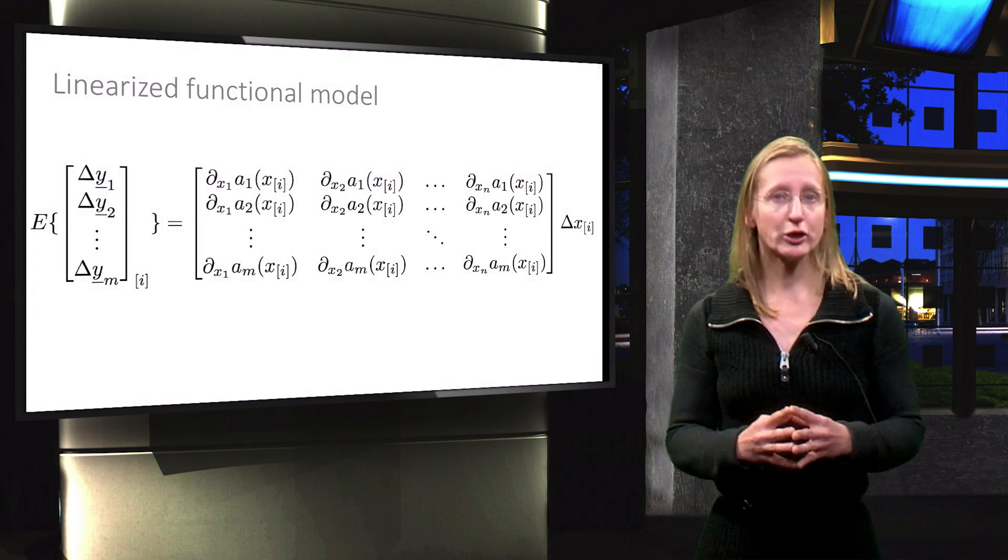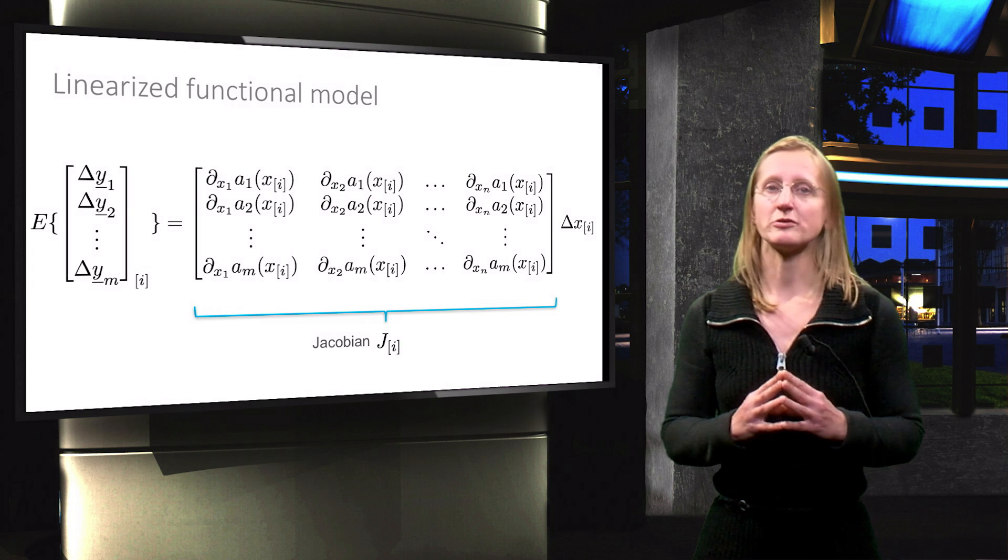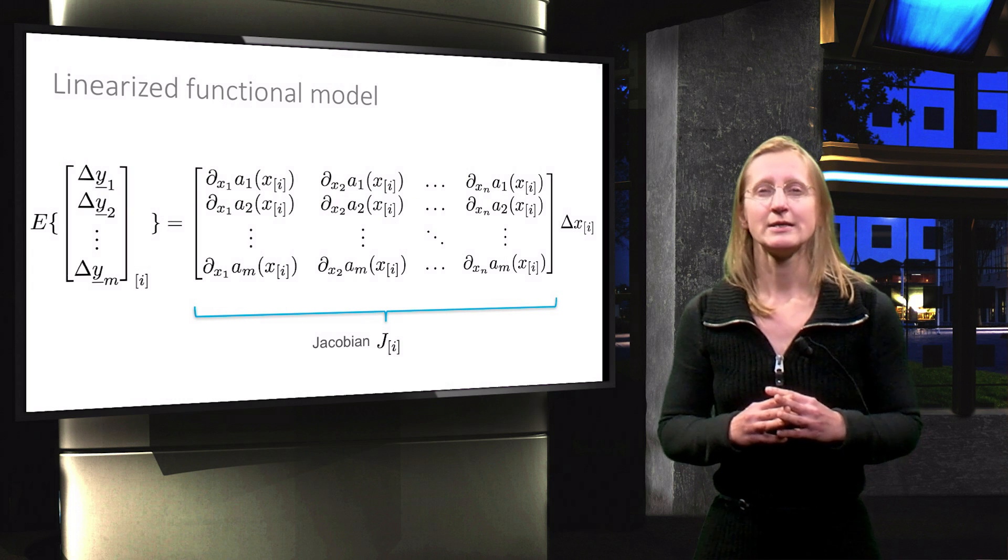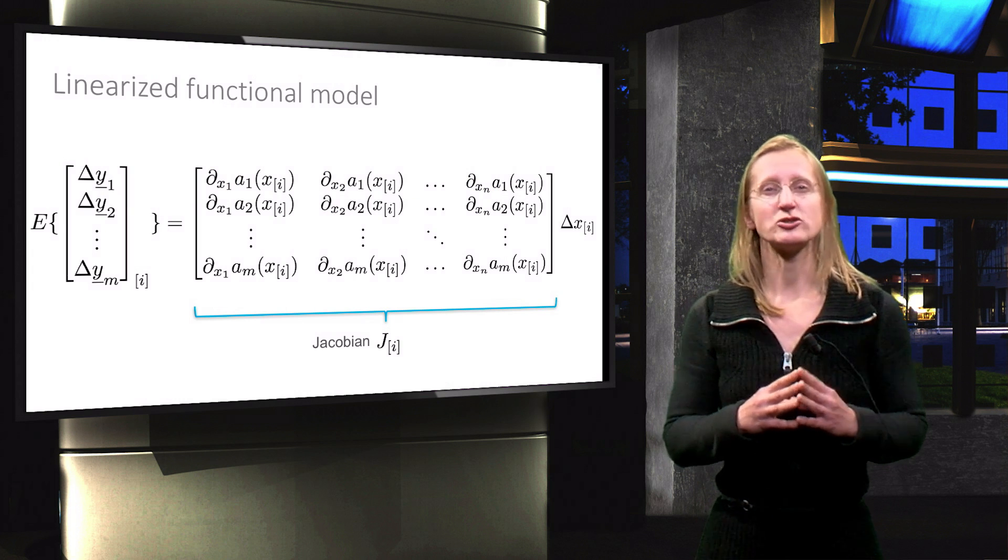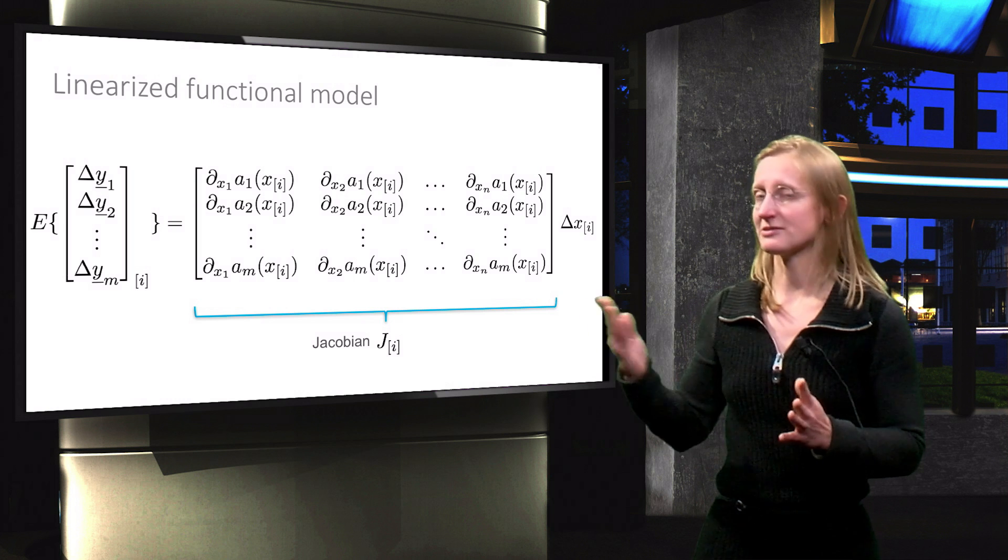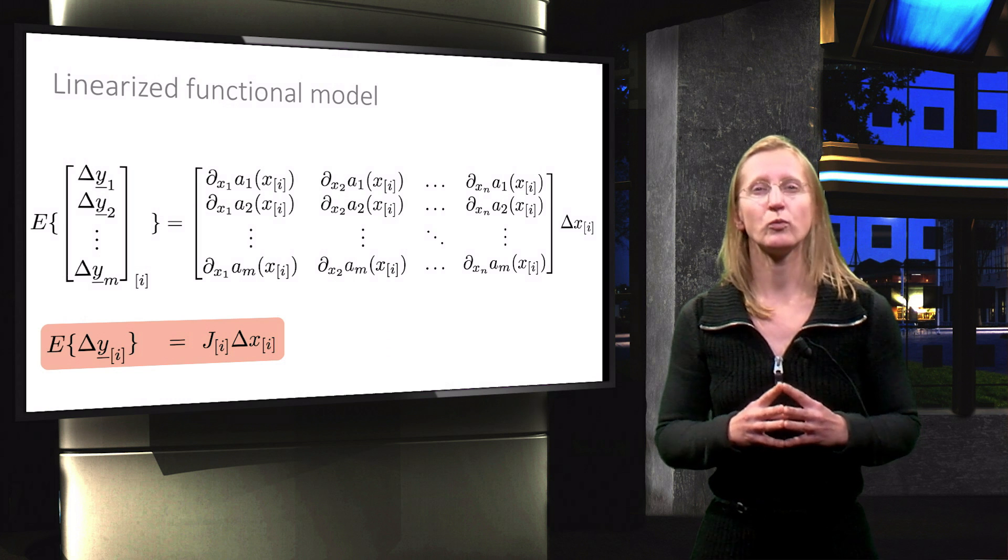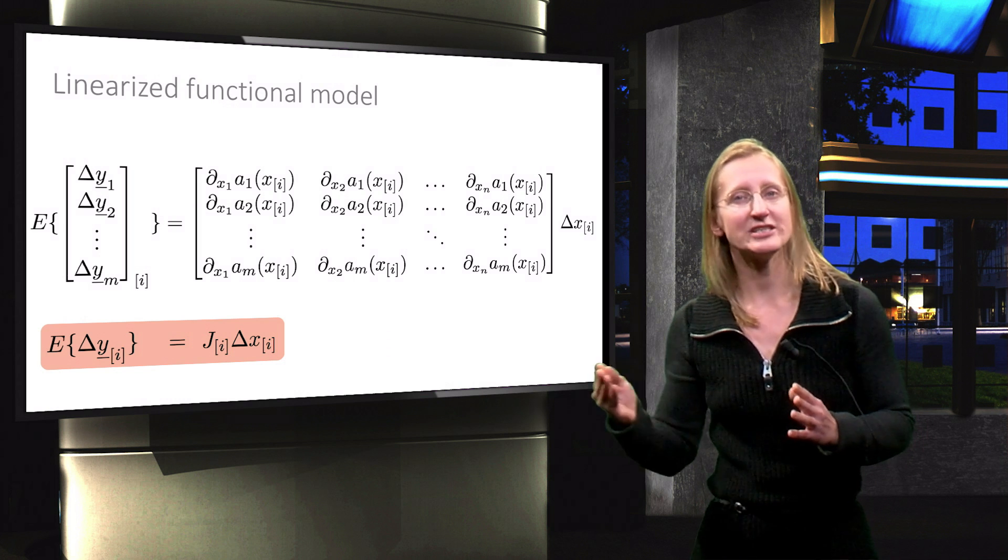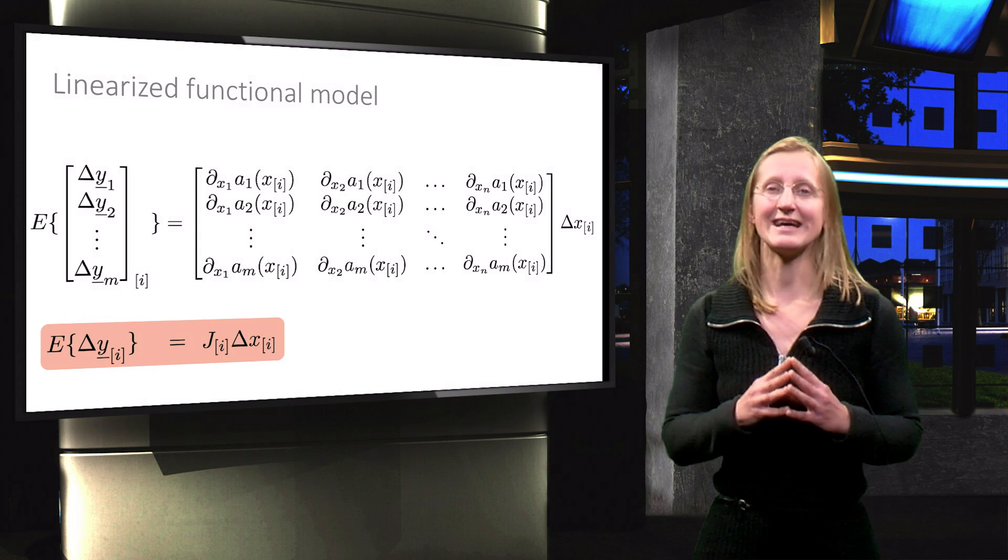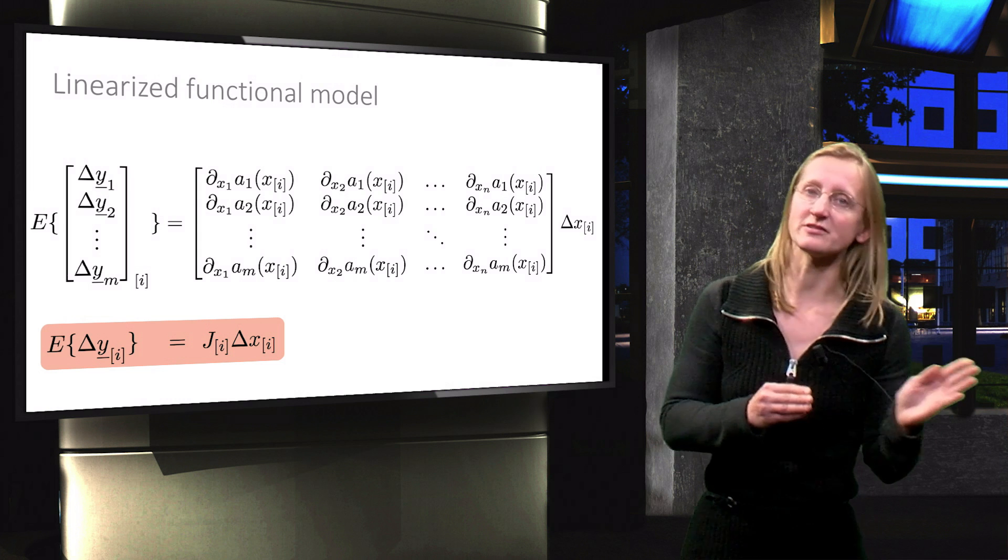The matrix is the Jacobian matrix, for which we use the notation J. The system of equations in short-hand notation becomes like this. Note that the delta y and the Jacobian will be different in each iteration, since they depend on the estimate of x from the previous iteration.